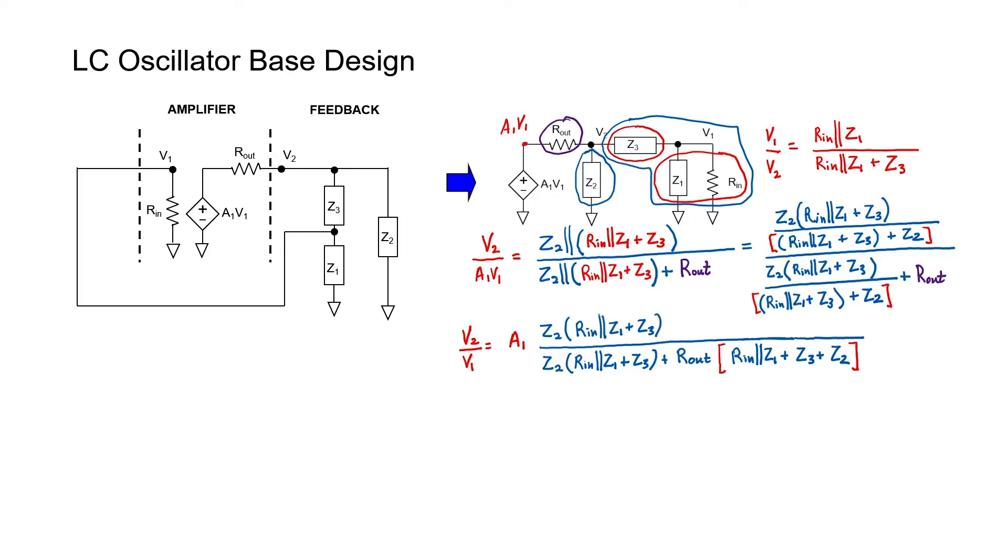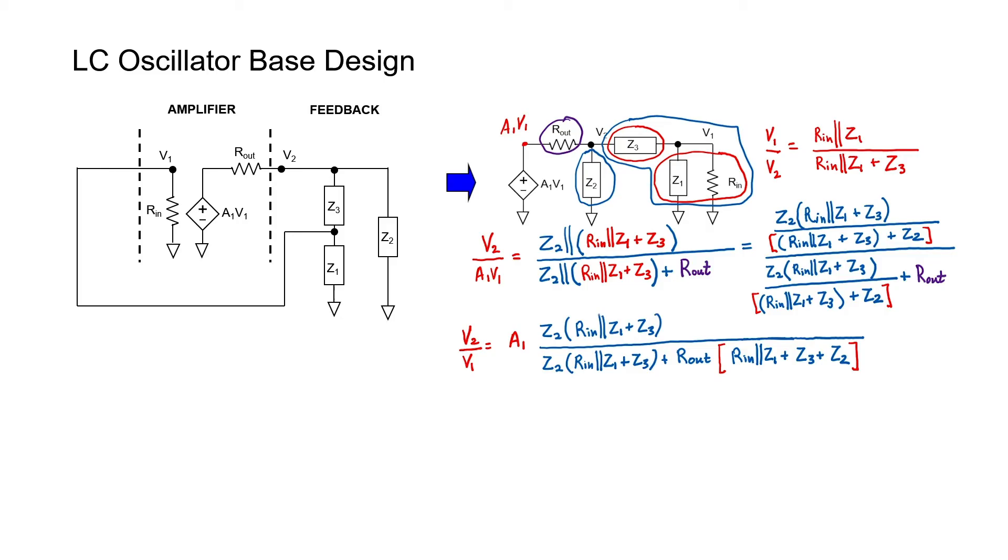We now have two expressions, V1 over V2 and V2 over V1. My strategy is going to be to multiply these two expressions times one another. The product has to be one, but I've left Rn in the expression, and we're going to assume that the input impedance is high even when we use a transistor.